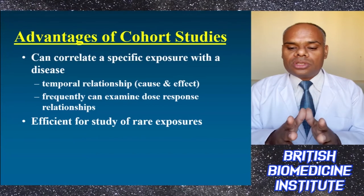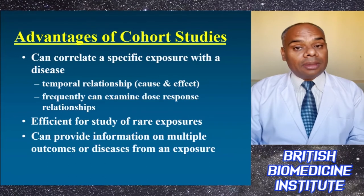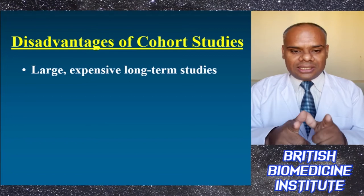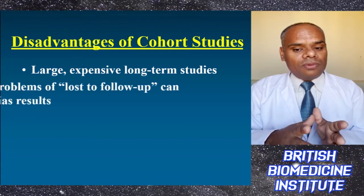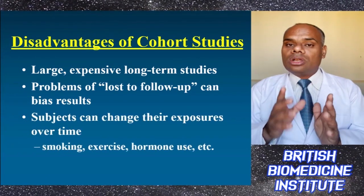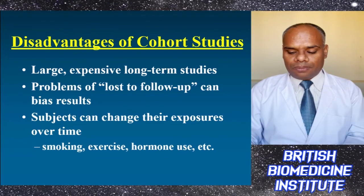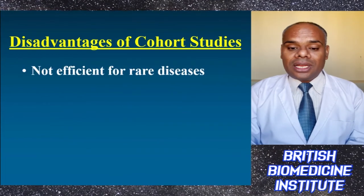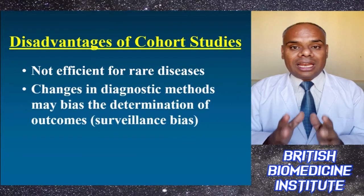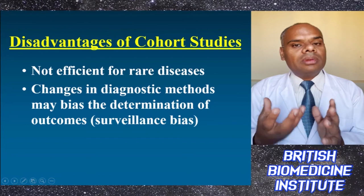Cohort studies can also provide information on multiple outcomes or diseases from a single exposure. The main disadvantages are that they are large, expensive, long-term studies. There is a problem with loss to follow-up, which can result in bias. Subjects can change their exposure over time, such as smoking, hormone use, etc. They are not efficient for rare disease data. Changes in diagnostic methods may also bias the determination of outcomes, known as surveillance bias.